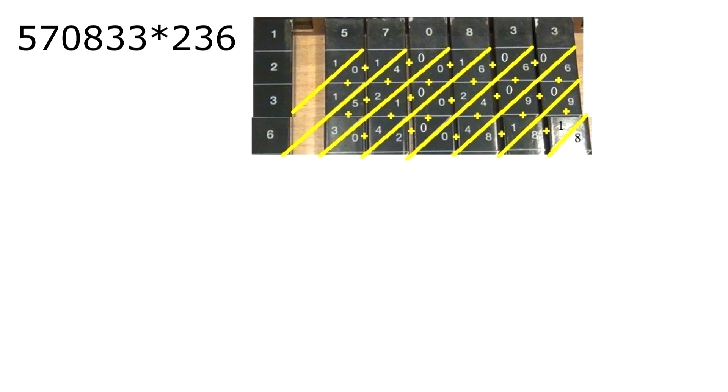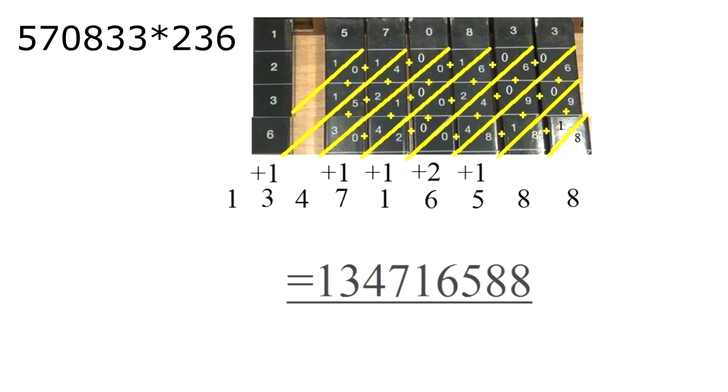The first number is an 8. 8 plus 1 plus 9 equals 18. That means that you can write down an 8 and have to carry over a 1. 1 plus 8 plus 1 plus 9 plus 0 plus 6 equals 25. That means that you can write down a 5 and carry over a 2. And you simply proceed in this way until you reach the last diagonal column. The overall result is then 134,716,588.